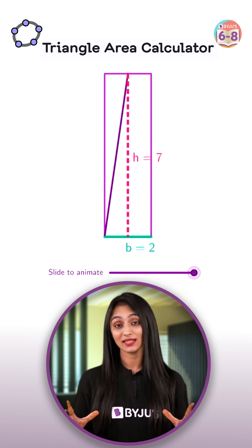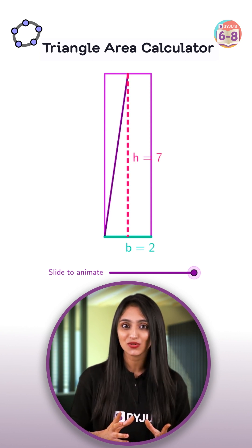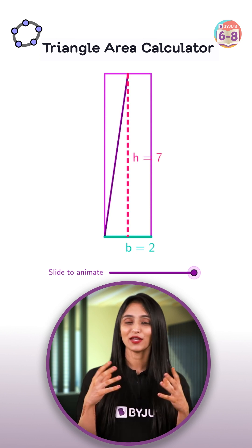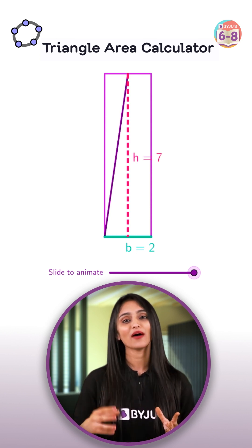Now since this rectangle is made up of two identical triangles, we can say that the area of triangle will be equal to half the area of the rectangle. How easy is that?